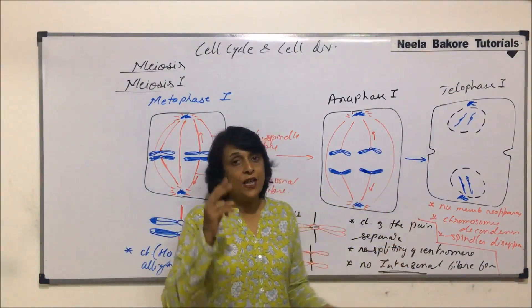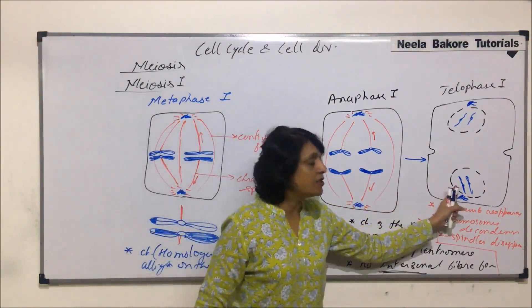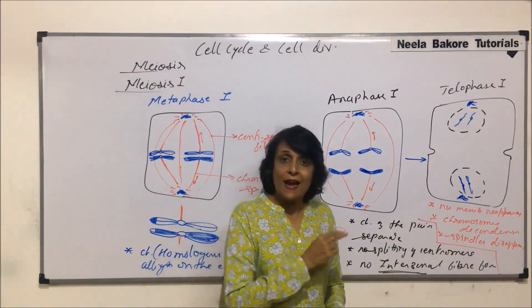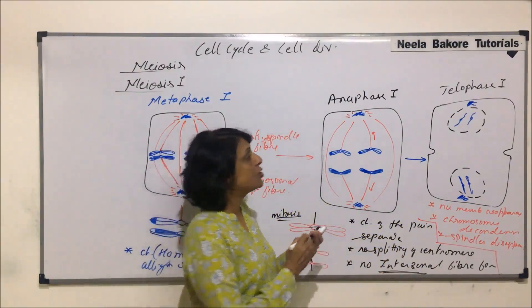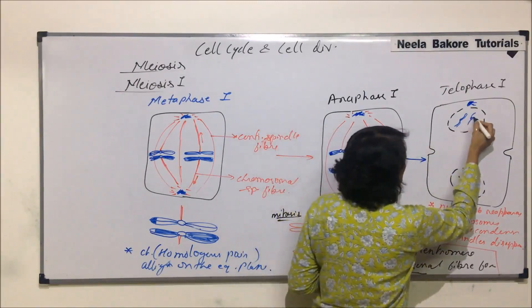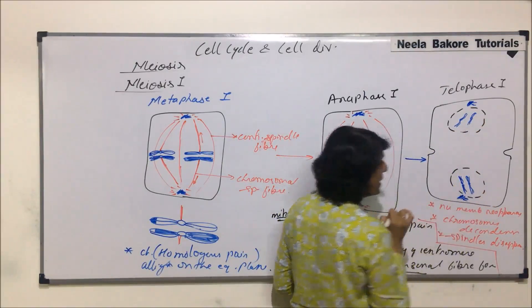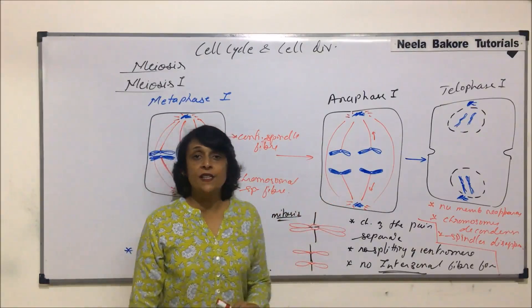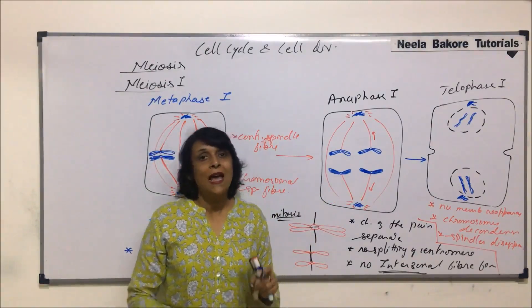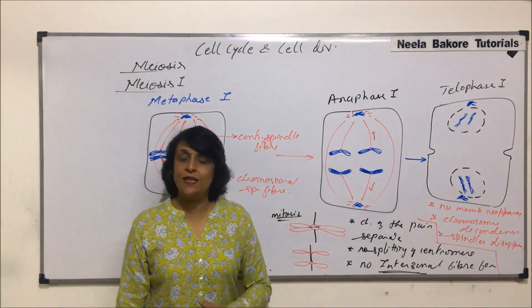By telophase 1, two nuclei are formed — karyokinesis 1 is complete. Each nucleus has only two chromosomes, reduced from the original four. Each chromosome, though drawn as thread-like, is still carrying double DNA — we can show the two arms to remember that each chromosome brings the double DNA. After this, the cell will undergo cytokinesis 1 to form two daughter cells, and then these two daughter cells will enter meiosis 2. In the next segment we will see what changes take place after this.